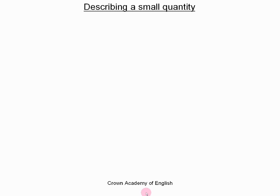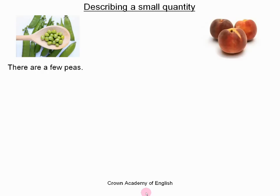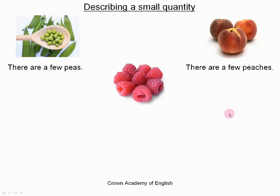Let us look at a situation where we are describing a small quantity of something. There are a few peas. There are a few peaches. And there are a few raspberries.